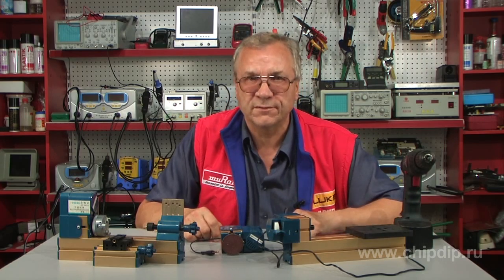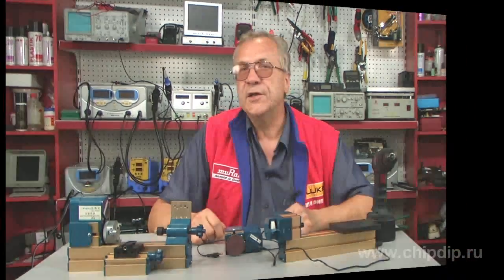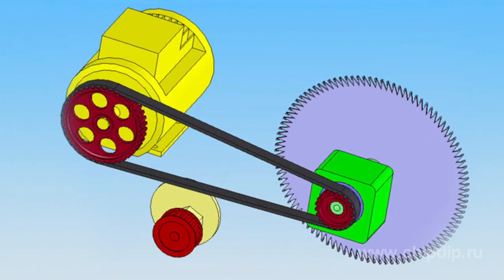Let's look at some types of electric drives. A non-variable frequency drive is the simplest type of electric drive. It is used in the start-stop mode and works at a constant speed.